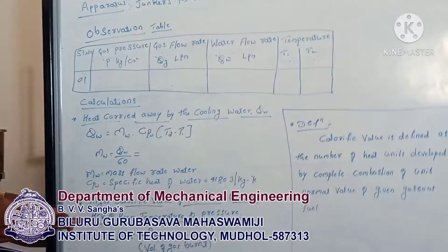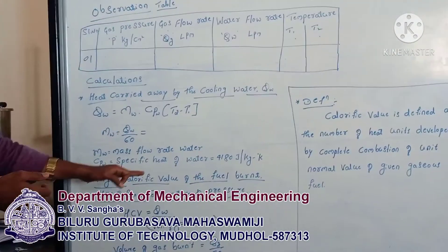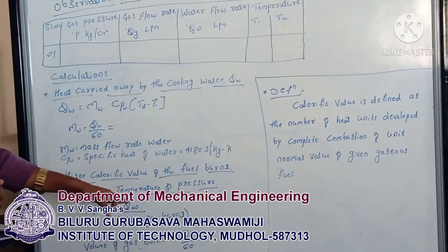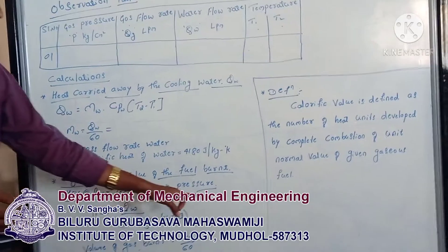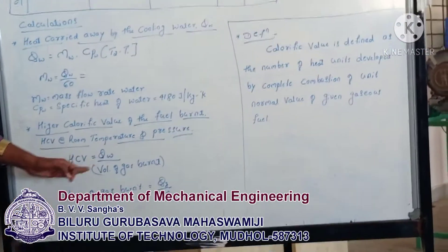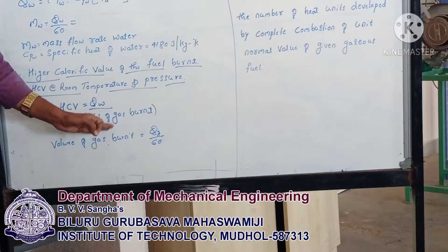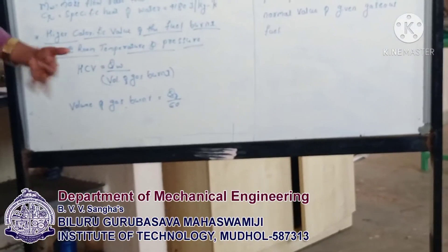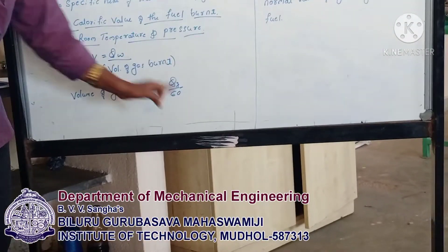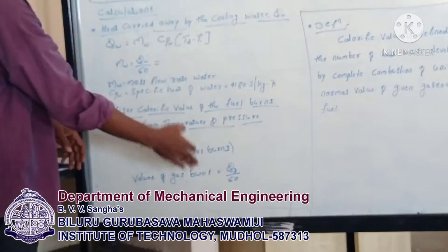Another formula is HCV — the Higher Calorific Value of the fuel burned at room temperature and pressure. HCV is equal to Qw divided by the volume of gas burned. The volume of gas burned is calculated as gas flow rate divided by 60.